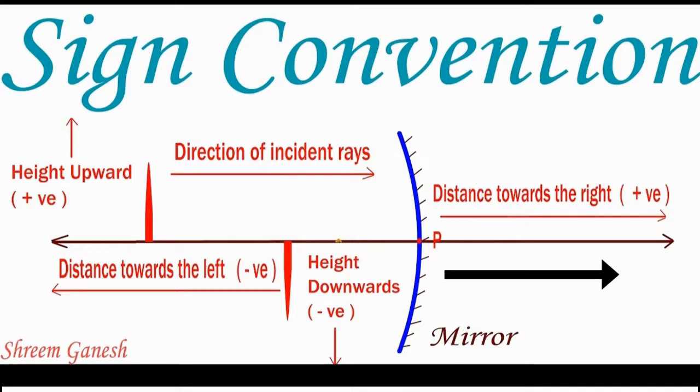Rule 2: The distances measured in the direction of incident light has to be taken as positive and those in the opposite direction of incident light to be taken as negative.